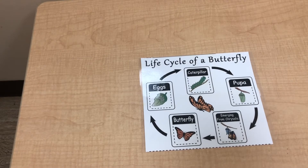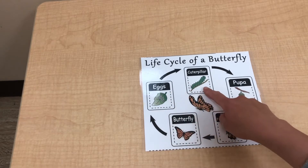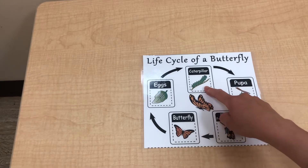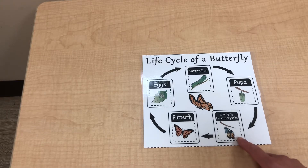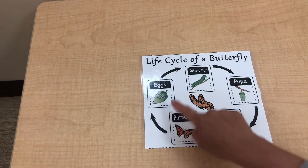Now we are going to review the life cycle of a butterfly by using the picture cards. The eggs are laid on a leaf. The caterpillar is hatched from the egg. The caterpillar is growing and growing and then grows into the pupa stage, or we can call it the chrysalis. The chrysalis is growing and emerging, and the butterfly is emerging from the chrysalis. And eventually the butterfly will come out. That's how the butterfly is growing.